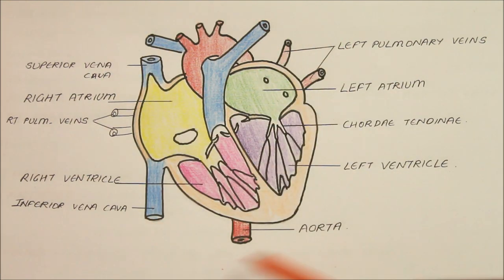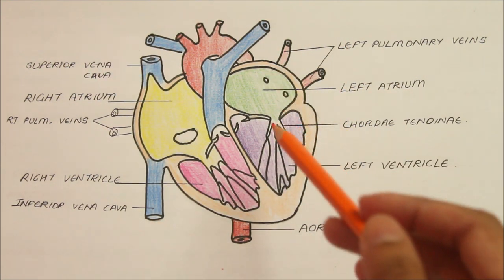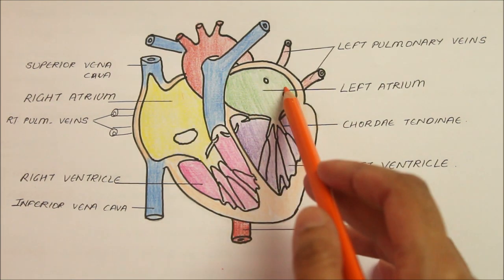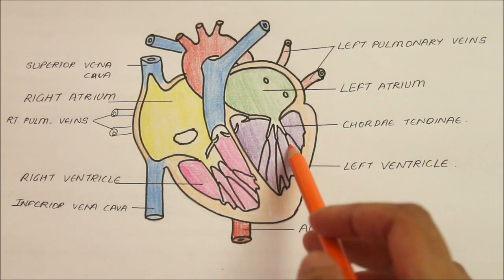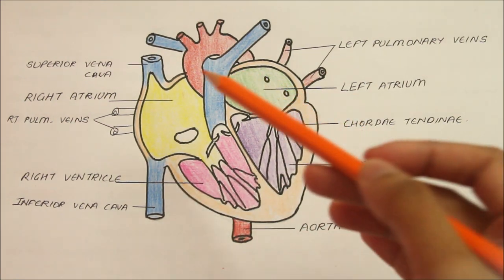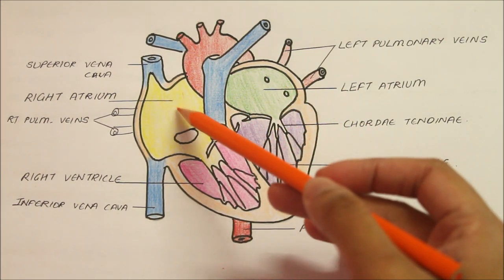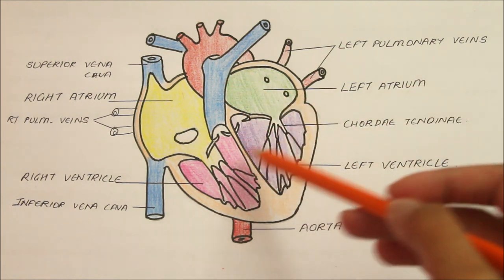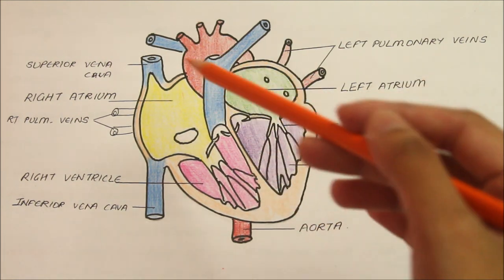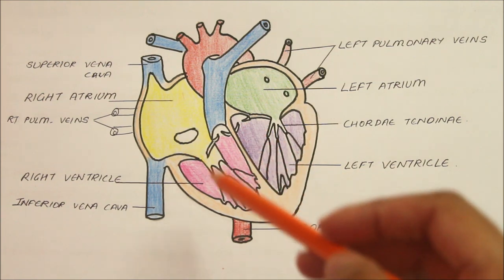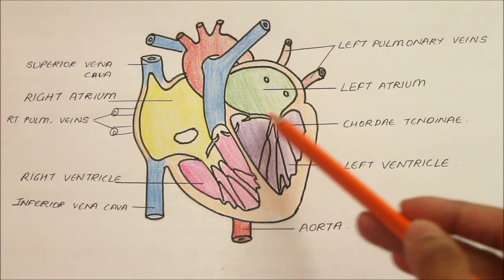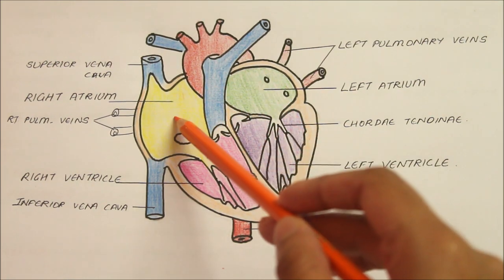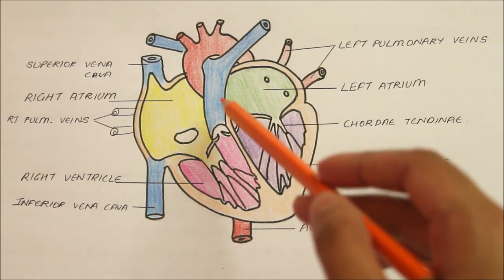Now let's look at the external features of the heart. The human heart has four chambers: the right and left atria and the right and left ventricles. The atria lie above and behind the ventricles. On the surface of the heart, they are separated from the ventricles by atrioventricular grooves. The atria are separated from each other by an interatrial groove.